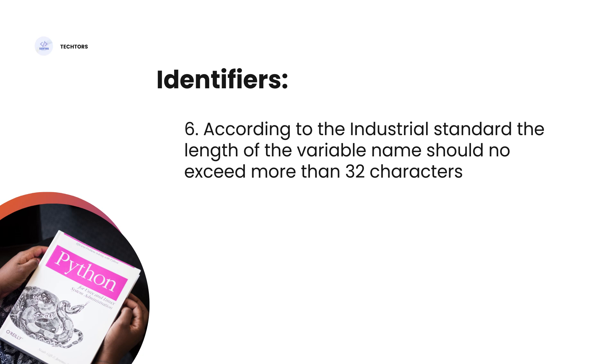Sixth rule: According to industrial standards, the length of the variable name should not exceed more than 32 characters. Now, we will create N number of characters. We will create variables. And according to industrial standards, we will create 32 characters.